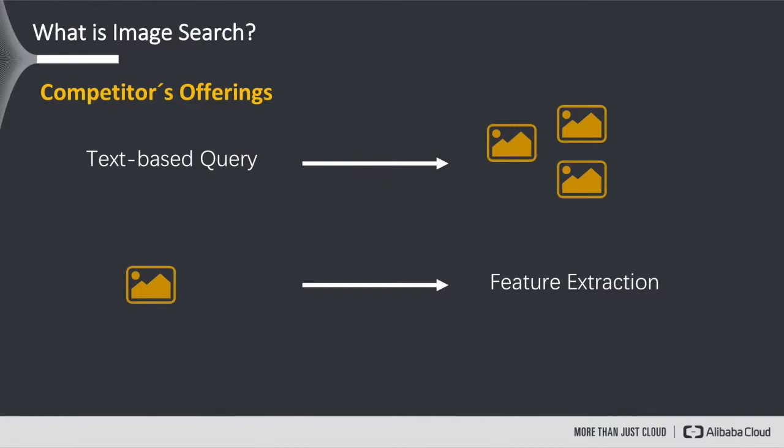The other offering is that you're providing an image as input and the service returns the result of a feature extraction. For example, the input image could contain different animals, and the service could then identify that there's a cat, a dog, and a horse on the image.